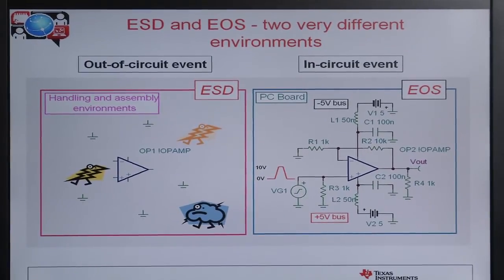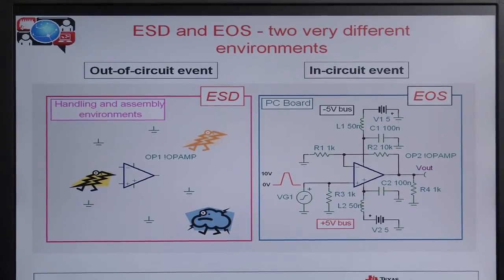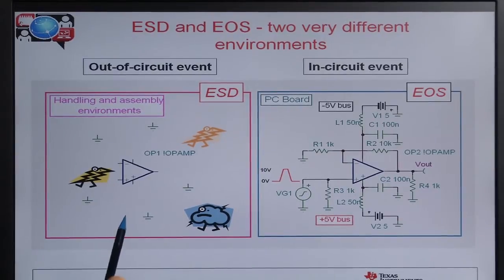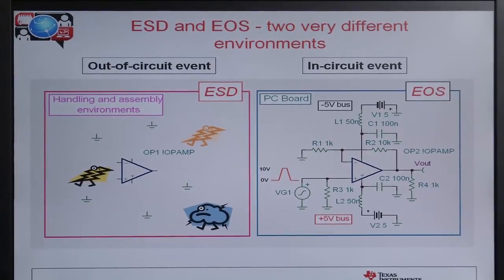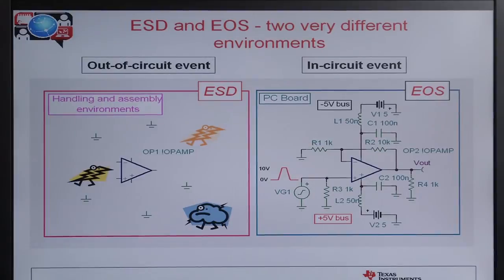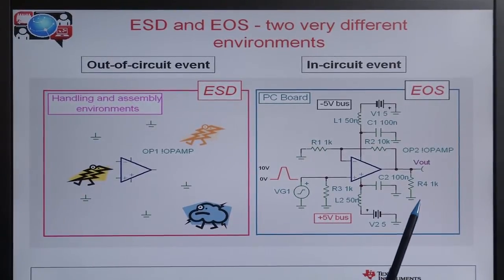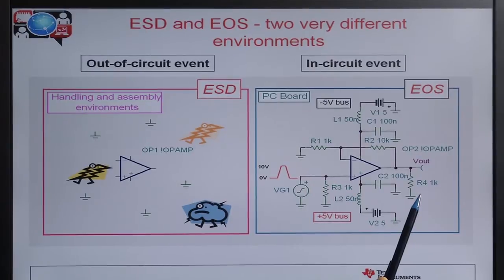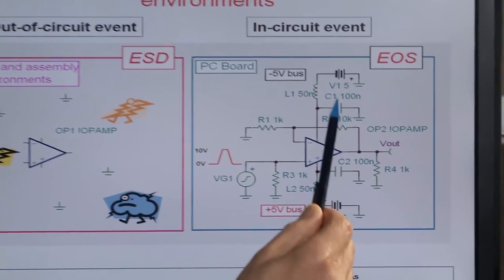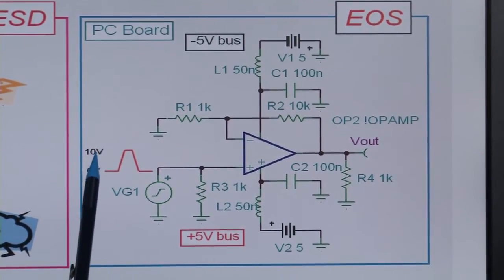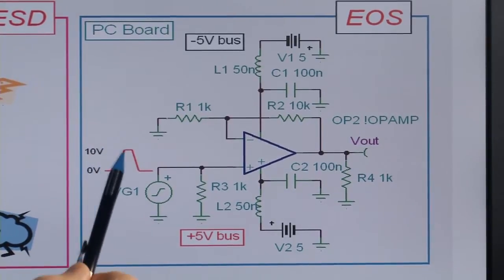Electrostatic discharge is a form of EOS, but it's an out-of-circuit EOS. It really comes about when we're handling and installing the integrated circuit. Internal to the analog integrated circuit are ESD protection circuits, designed to handle this sort of event and protect the integrated circuit. EOS, on the other hand, is where we're operating our integrated circuit — installed on a printed circuit board and in use. In this case, an operational amplifier with supply voltages of plus and minus 5 volts may have its input subjected to a pulse as large as 10 volts, which is 5 volts above the supply rail — a level many operational amplifiers are not rated for.